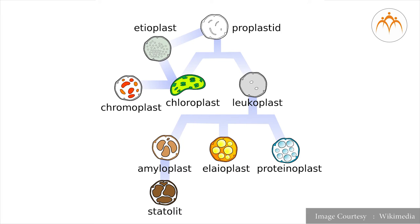Leukoplasts. Leukoplasts are colorless plastids which store nutrients. Amyloplasts store carbohydrates like starch in potatoes.